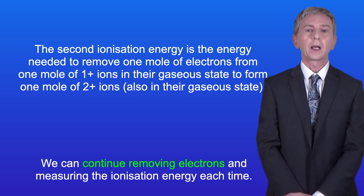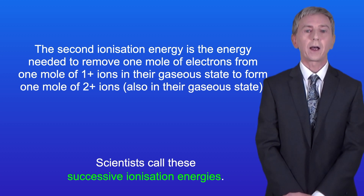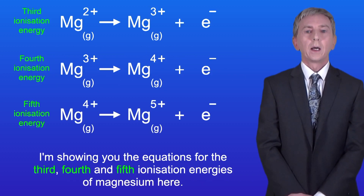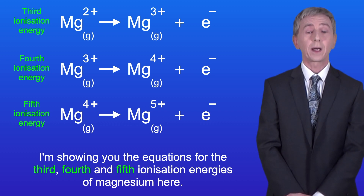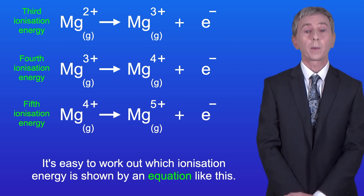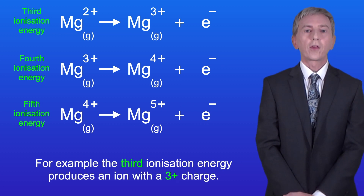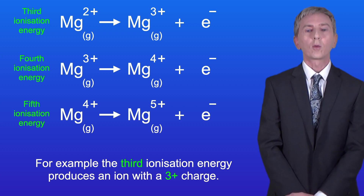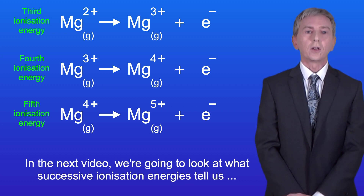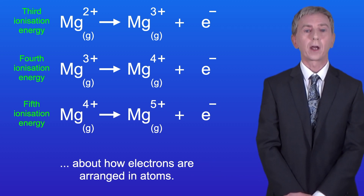We can continue removing electrons and measuring the ionization energy each time, and scientists call these successive ionization energies. I'm showing you the equations for the third, fourth, and fifth ionization energies of magnesium here. It's easy to work out which ionization energy is shown by an equation like this — the ionization energy shown is the same as the charge on the ion produced. For example, the third ionization energy produces an ion with a 3+ charge. In the next video we're going to look at what successive ionization energies tell us about how electrons are arranged in atoms.